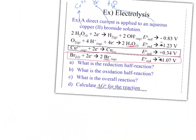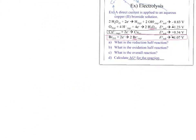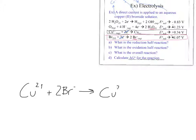Now let's combine those down into an overall reaction. We flip the oxidation half-reaction mentally, the two electrons cancel on each side, and our overall reaction is Cu²⁺ reacting with two Br⁻ to produce copper solid plus Br₂ liquid. So we generate solid copper and bromine liquid.